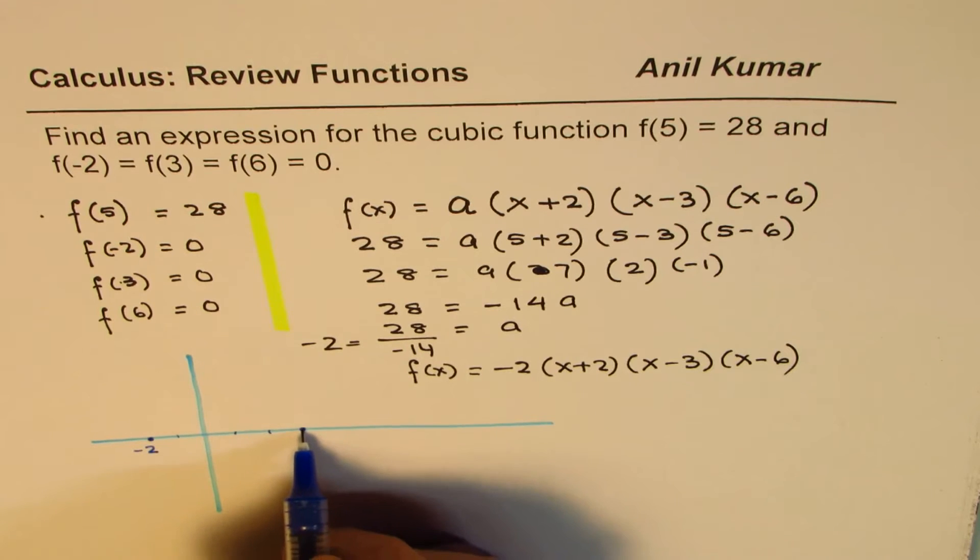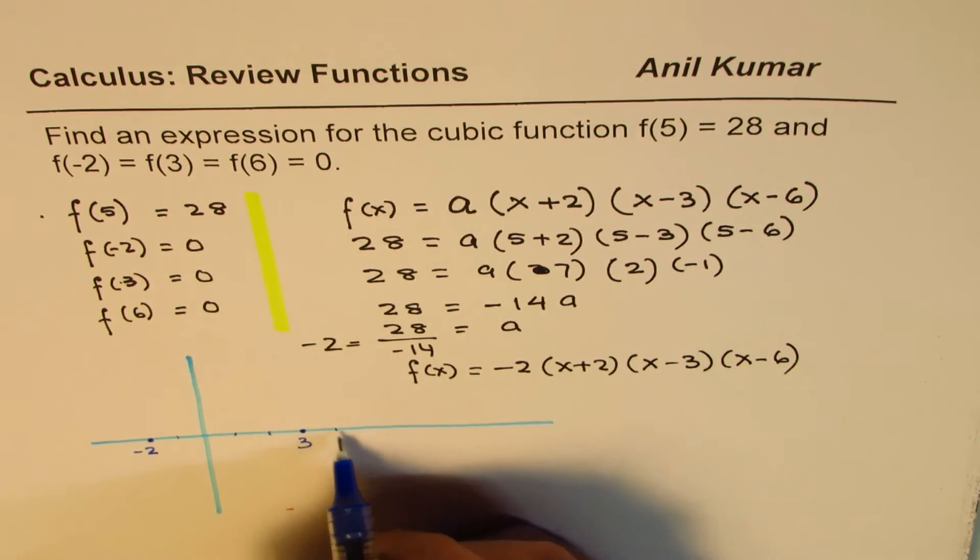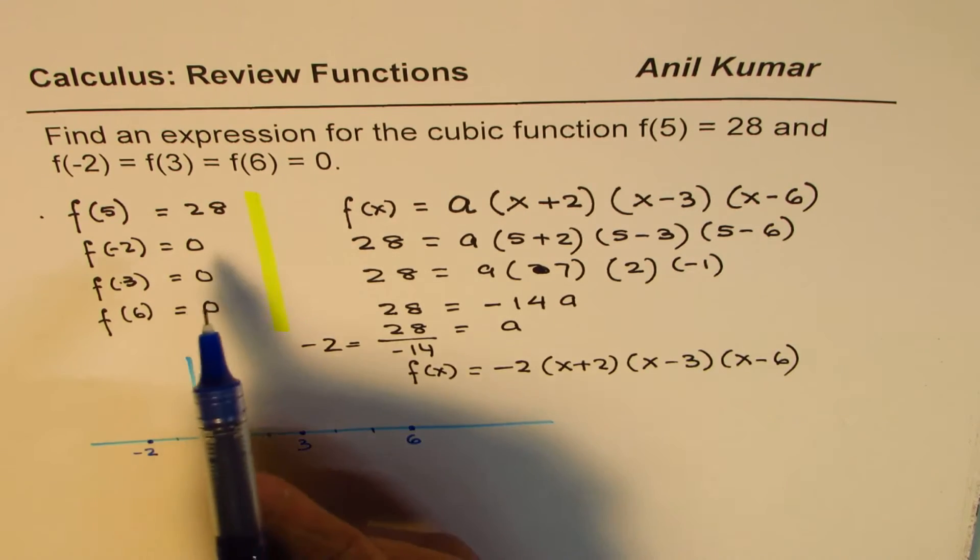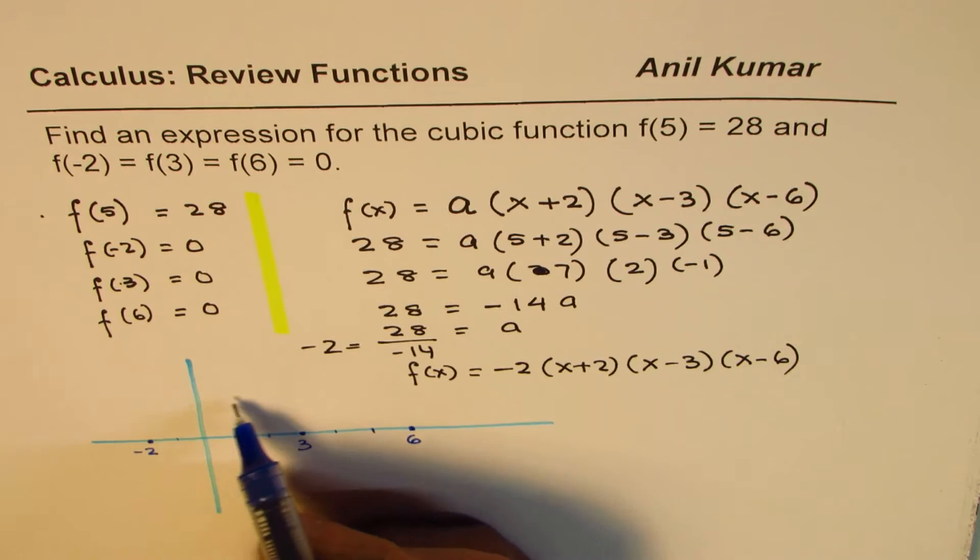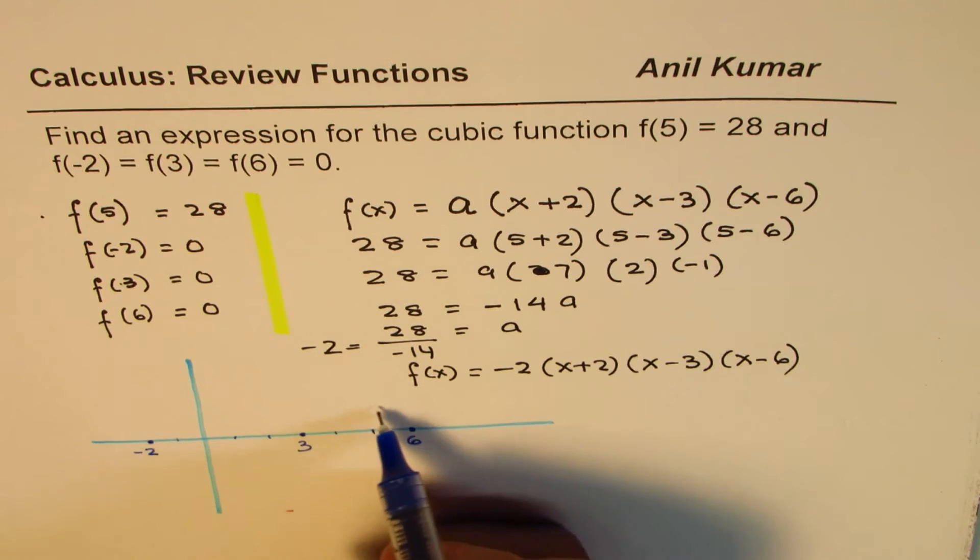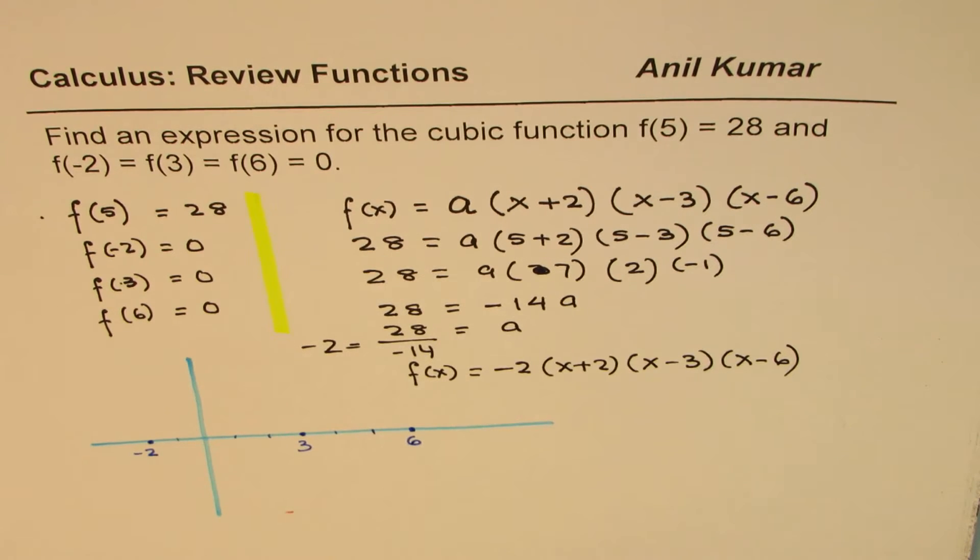And then we have 3 and 6. Zeros at 3, and then at 4, 5, and 6. Okay, so these are the zeros for us. Now, cubic function could go like this or could go like this. Is it okay? Either way it could go.